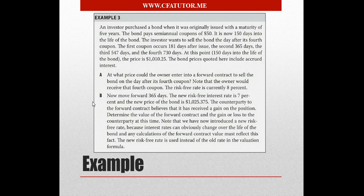For now, I'll be showing you an example that's being taken from the CFA curriculum. I just scanned it, and it appears in the reading. I'll show you how to use the Excel sheets in order to solve such an example. An investor purchased a bond when it was originally issued with maturity of five years. The bond pays semi-annual coupons of $50.